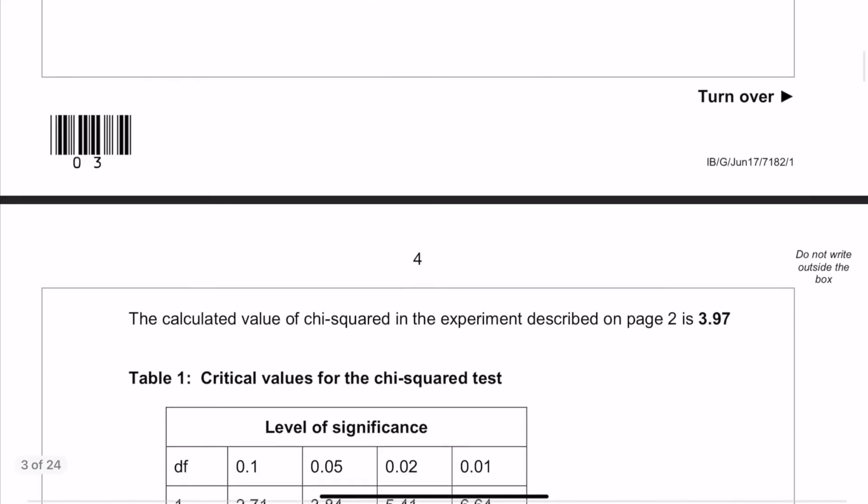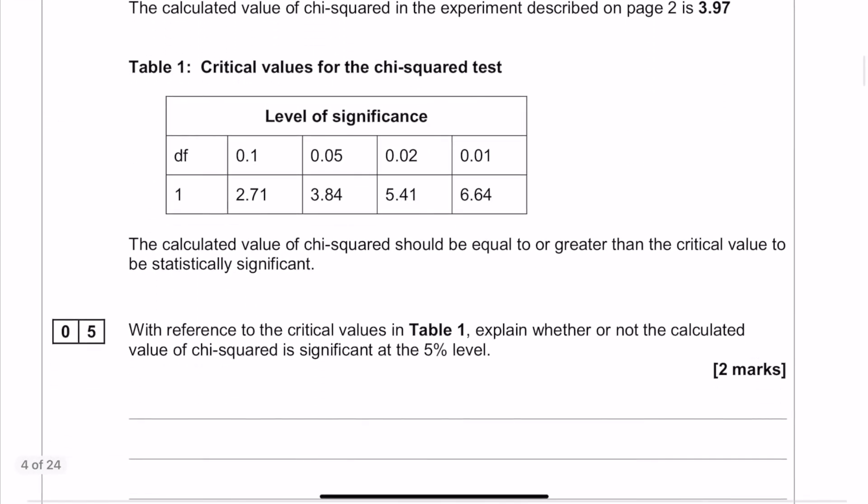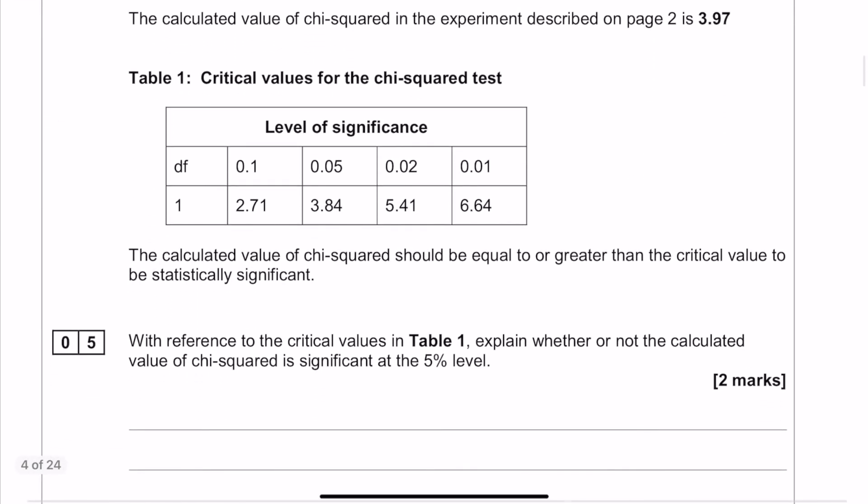And then the last question is all about establishing significance. We're given all the information that we need to answer the question. We have the calculated value and we know that we're interested in the five percent level. The table doesn't have a lot of information in there, and once we know what level of significance we're looking at or what level of probability we're looking at, we pretty much have our answer.